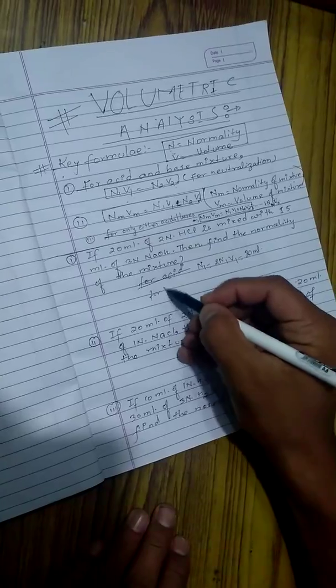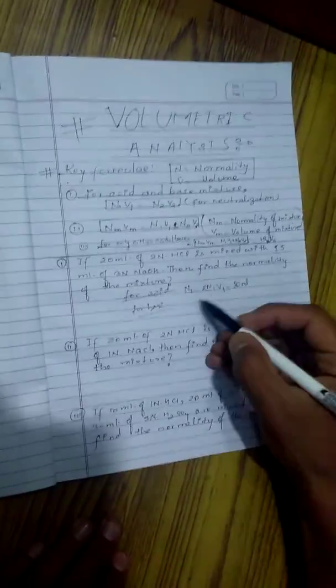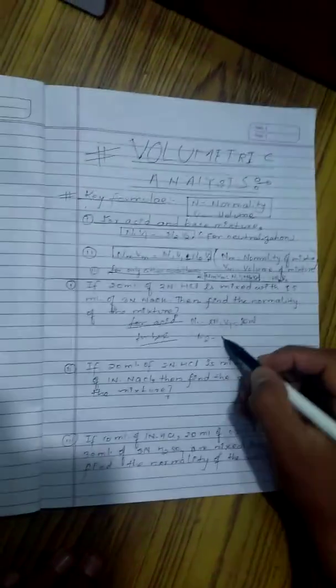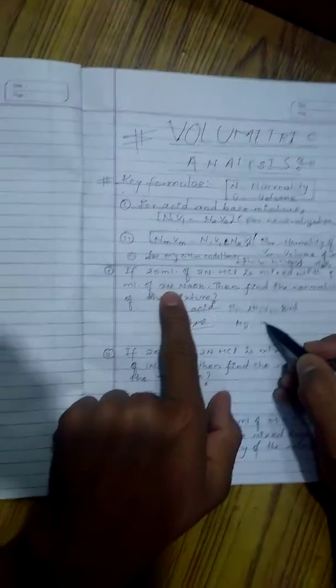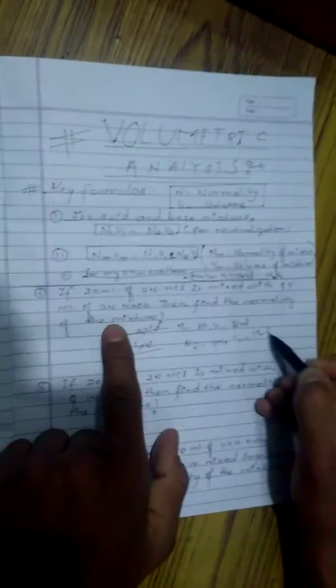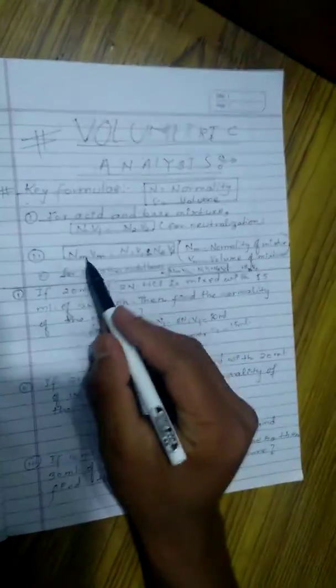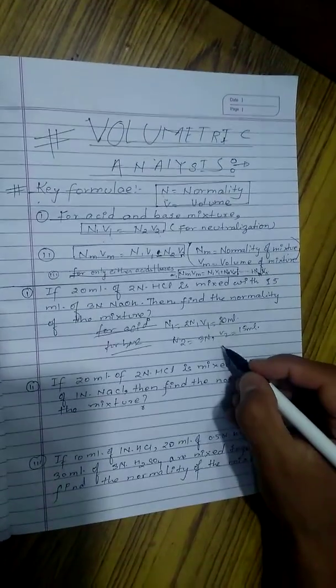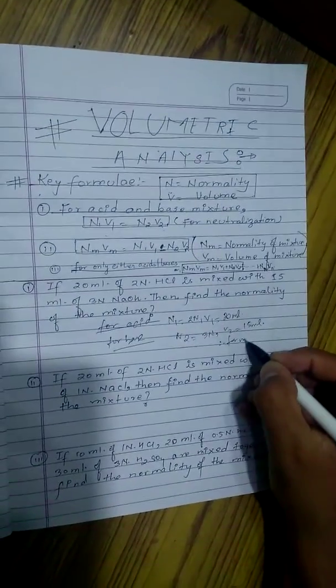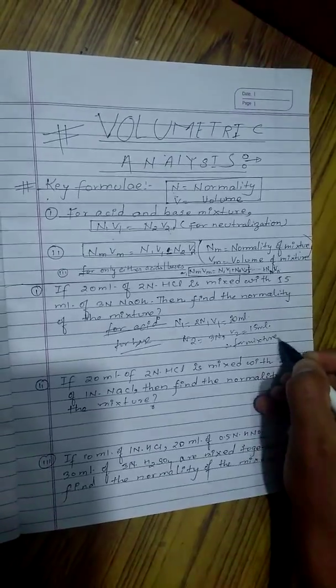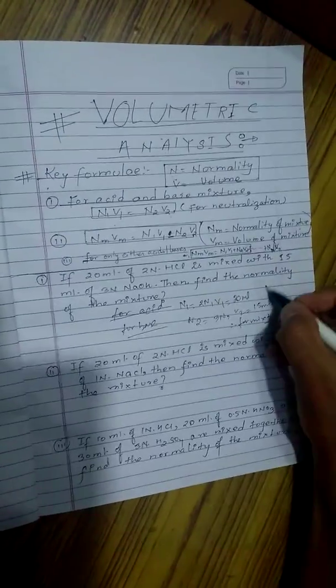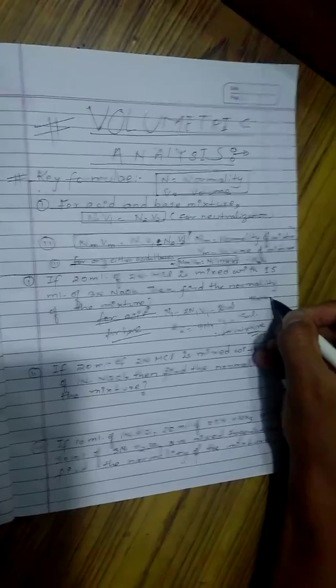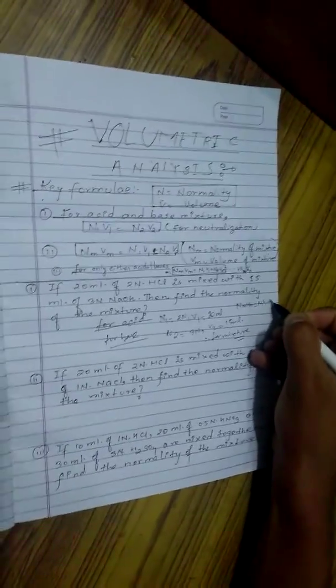Similarly, for base, N2 is equal to 3N, V2 is equal to 15 ml. Then we can use the formula, this kind of formula we already discussed above. Therefore, for mixture, NmVm is equal to N1V1 minus N2V2. Easy, easy equation. Now I can solve it.